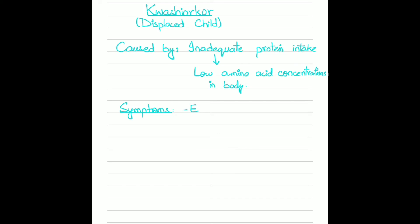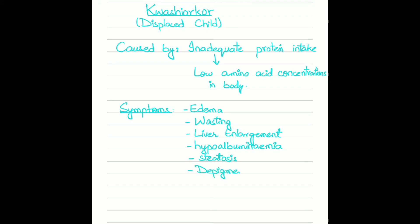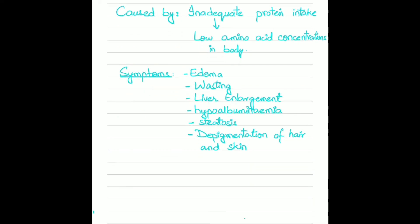What are the symptoms? The symptoms are edema, wasting, liver enlargement, and hypoalbuminemia due to decreasing plasma albumin levels leading to reduced osmolarity, which causes more plasma leaking out of capillaries and thus causing edema. Then we have steatosis — infiltration of the liver cells with fat — and we have depigmentation of body and hair. Why? Because there is melanin deficiency, and melanin is a complex polymer of the amino acid tyrosine.